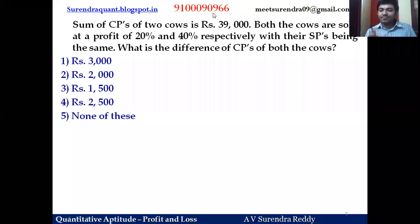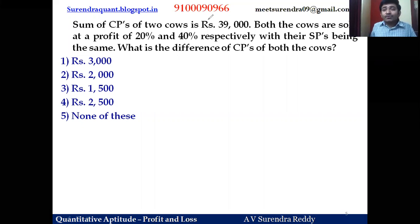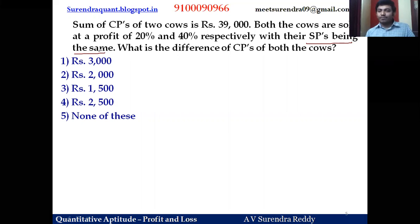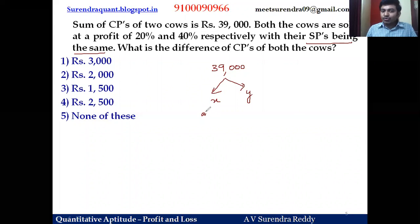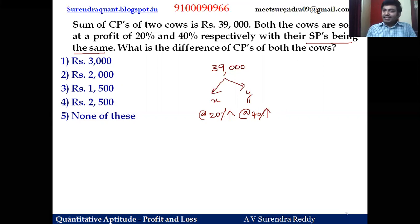Next question: the sum of the cost prices of two cows is 39,000 rupees. Both cows were sold at profits of 20 percent and 40 percent respectively. The selling prices are the same. What is the difference of the cost prices of both cows? Let one cow cost x and the other y. The first is sold at 20 percent gain and the second at 40 percent gain, with equal selling prices.